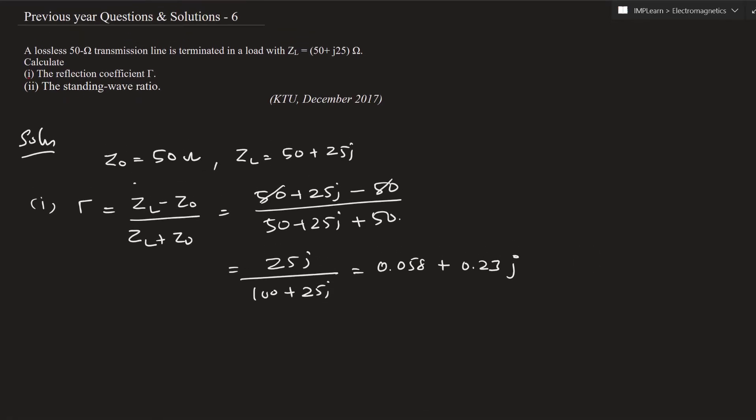Standing wave ratio expression is equal to 1 plus 0.058 plus 0.23j divided by 1 minus 0.058 plus 0.23j.